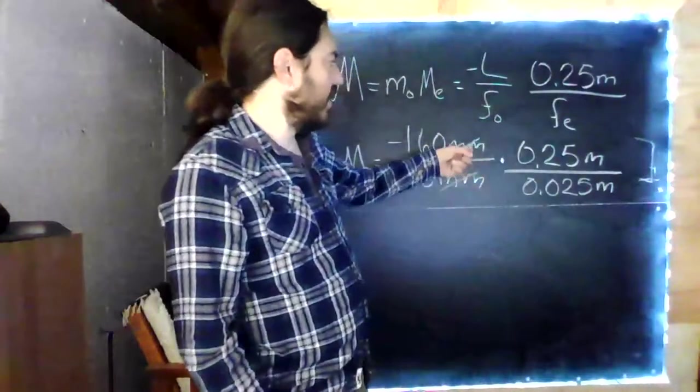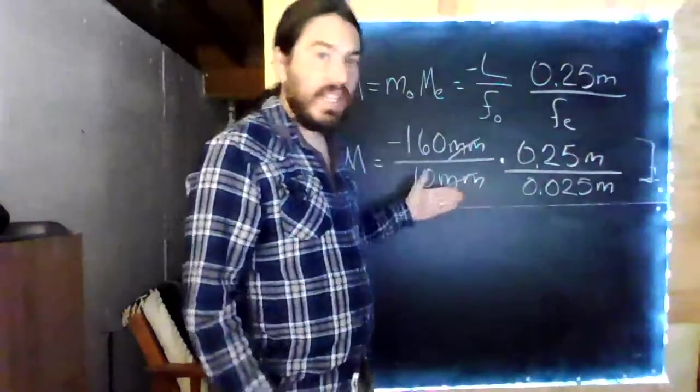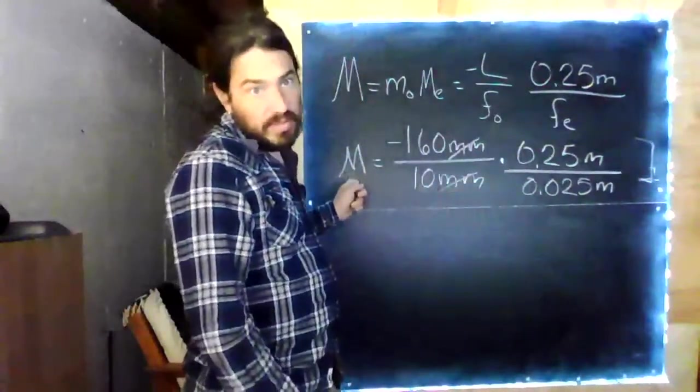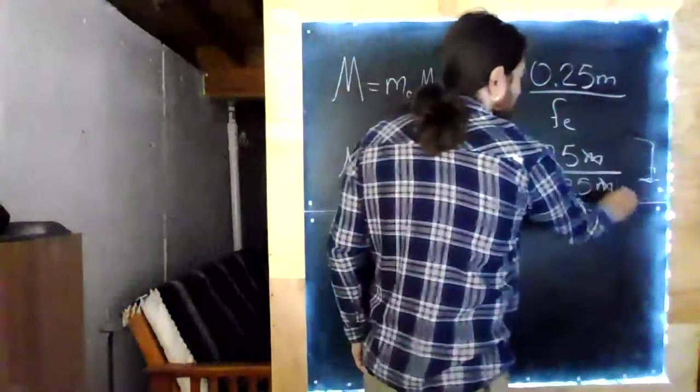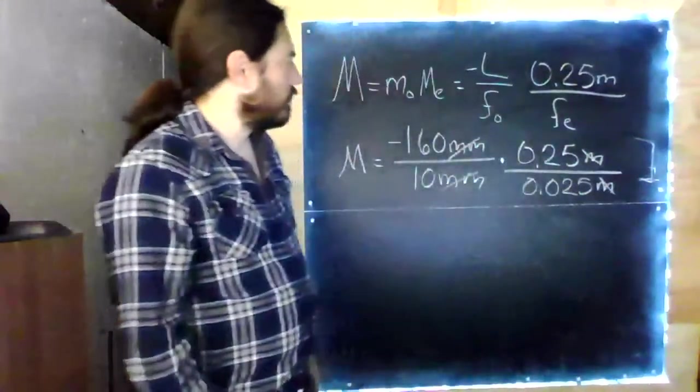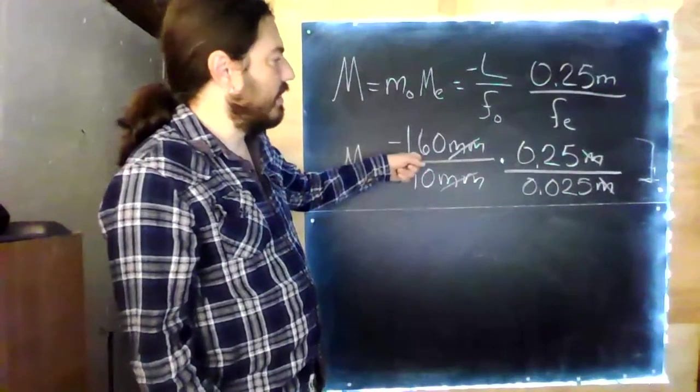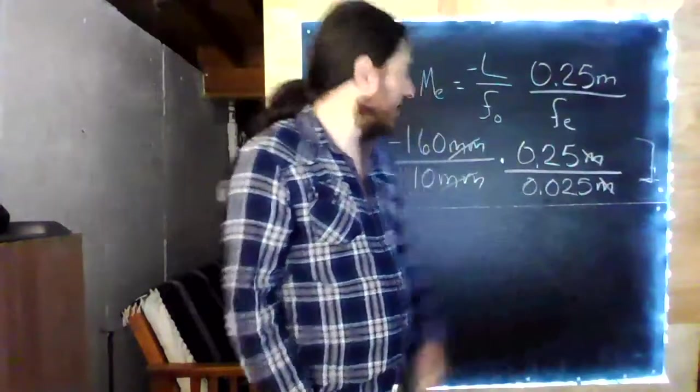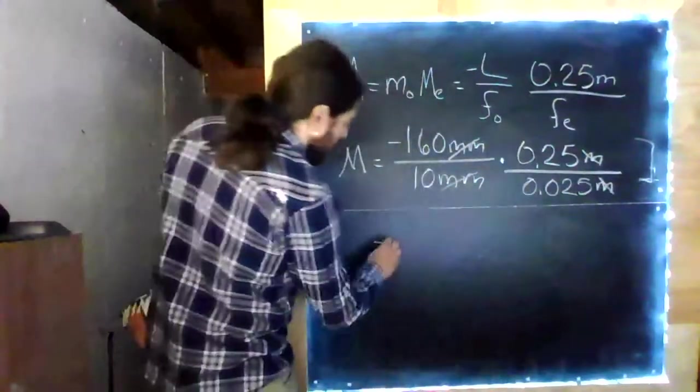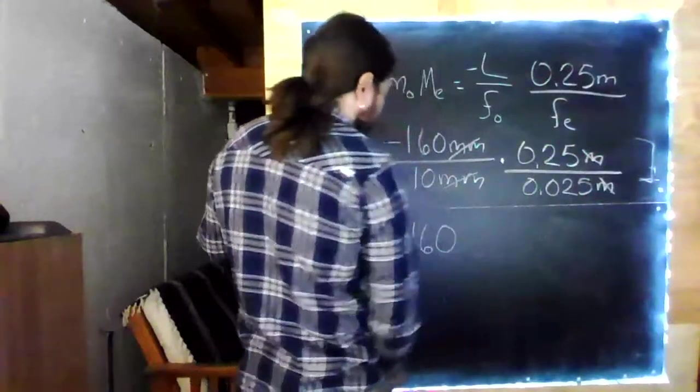Again, it doesn't really matter that these units jive with these units. What matters is that all the units cancel, so we end up with a unitless magnification. So, my millimeters canceled here, and my meters are canceling there. 160 by 10 is 16. 0.25 by 0.025 is 10. And we end up with a magnification of negative 160.